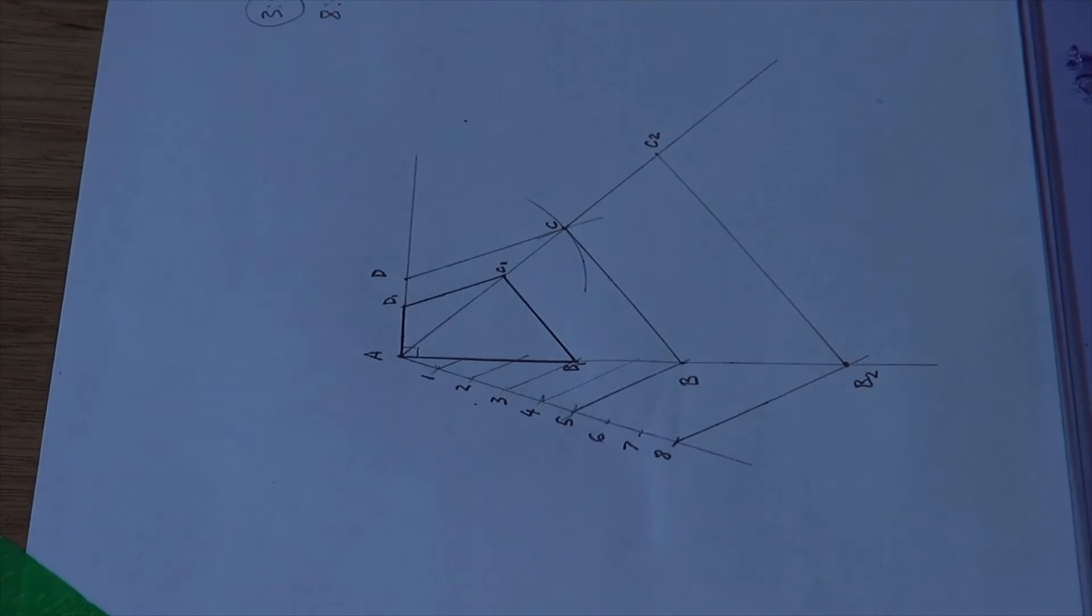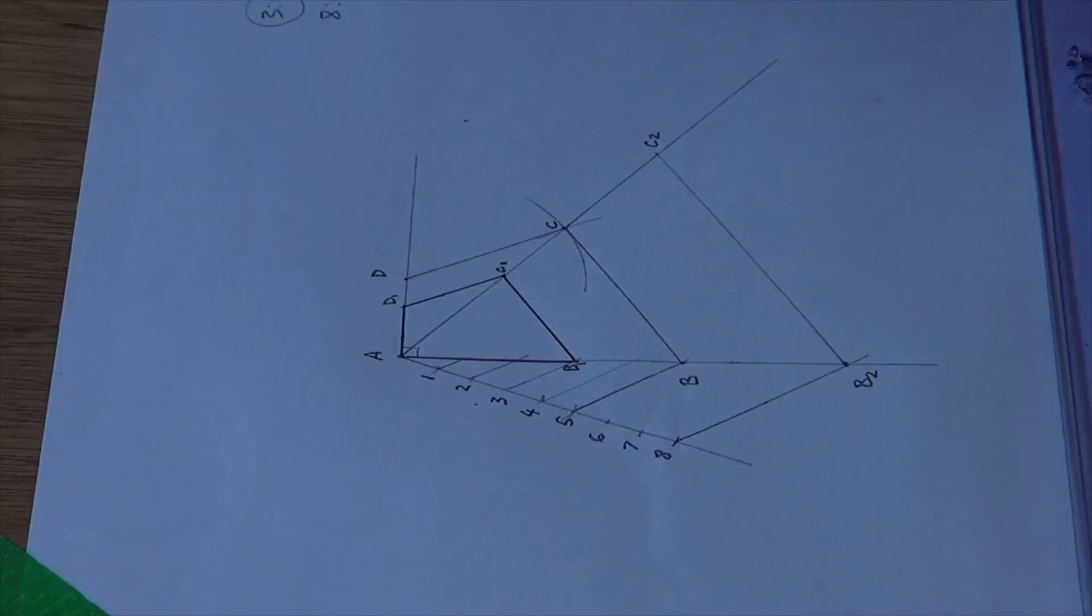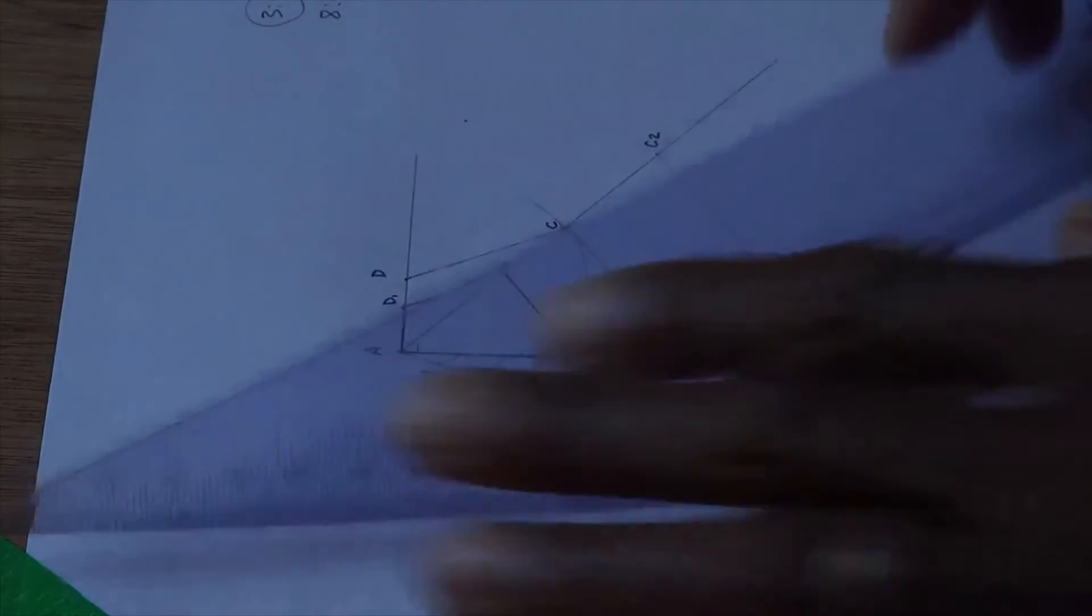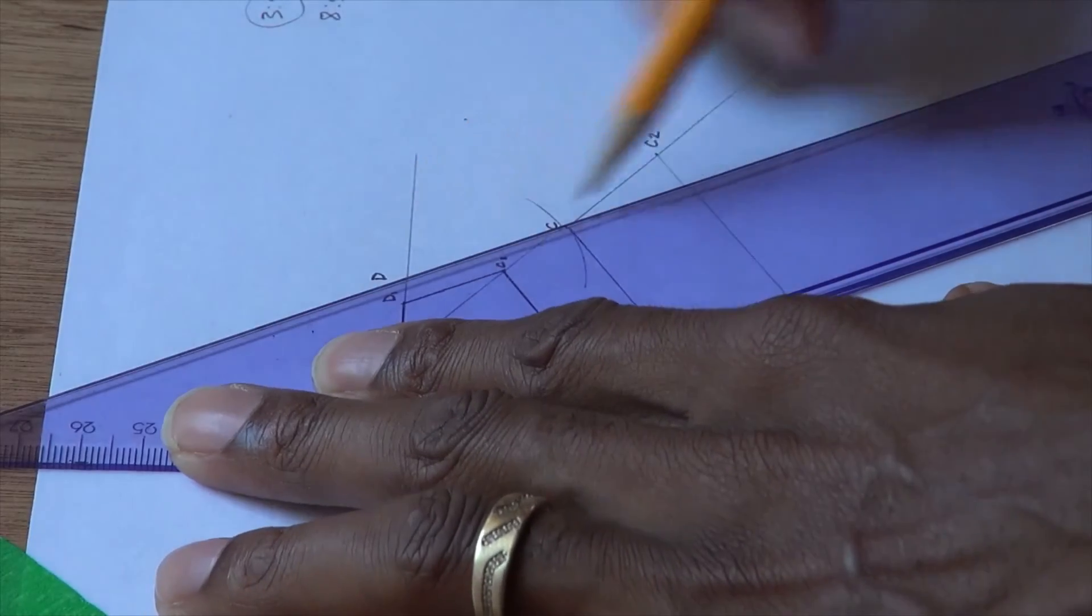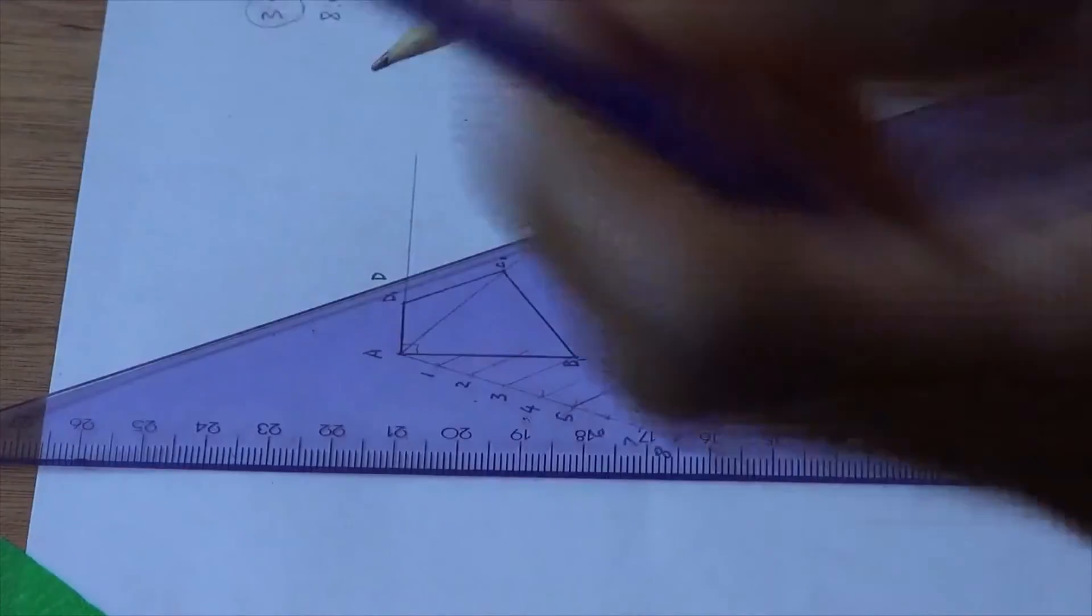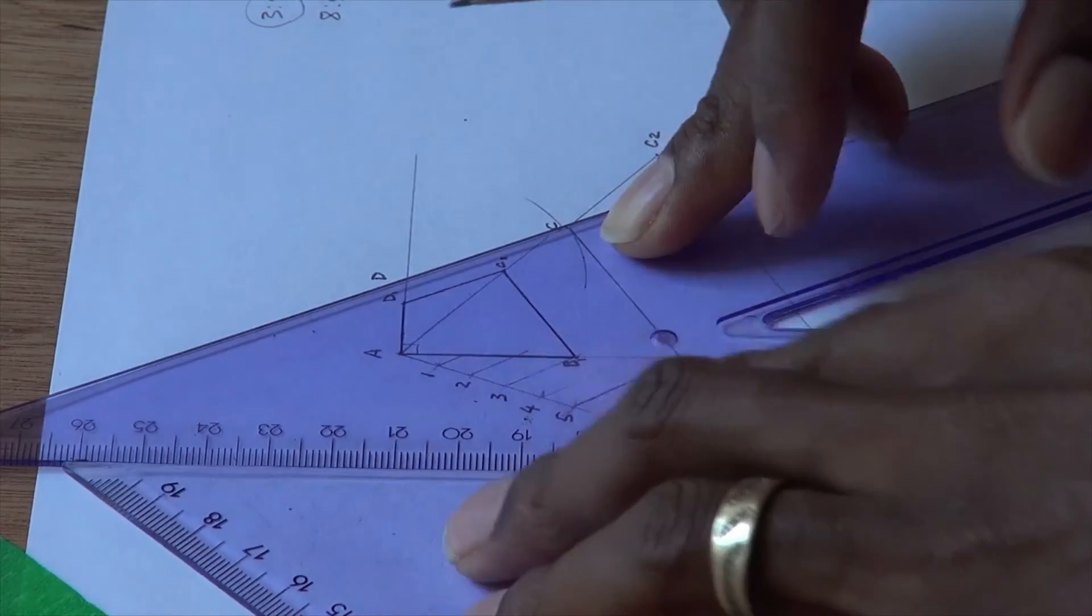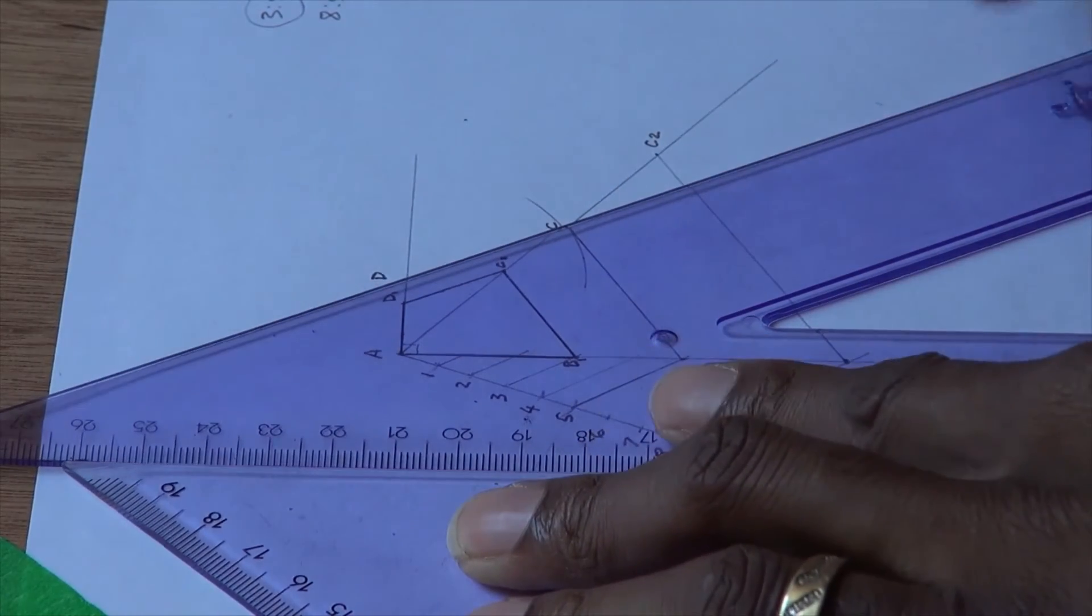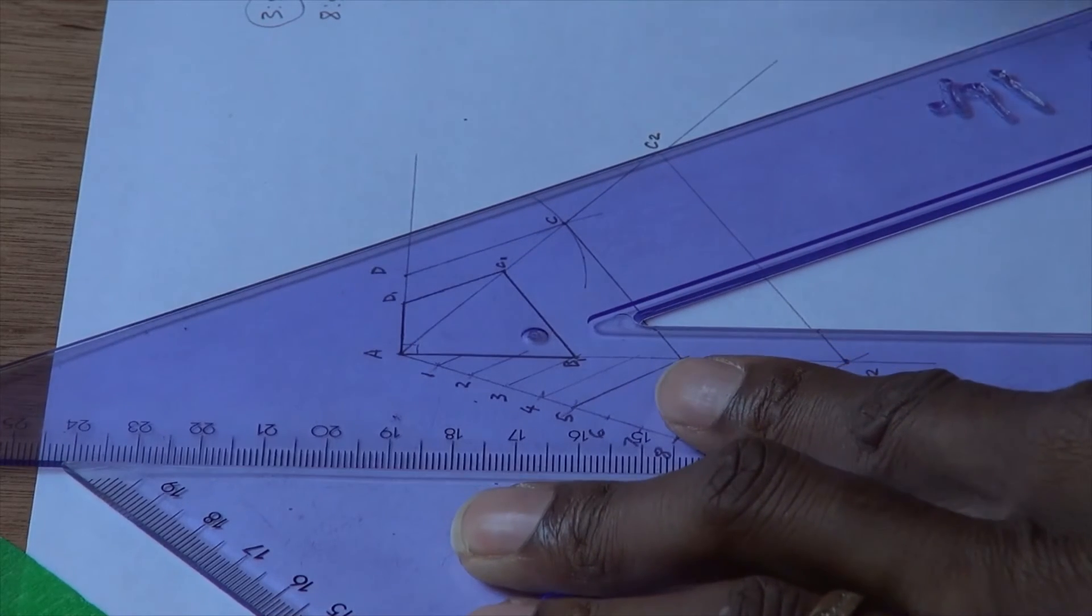The final side we need to draw a parallel line to is DC. We are going to have this set square against DC, with our second set square at the bottom, and we are going to slide from C to C2.